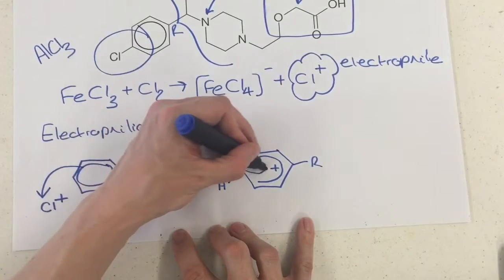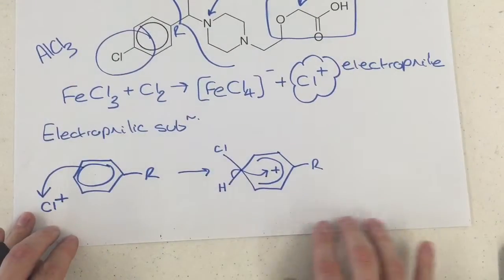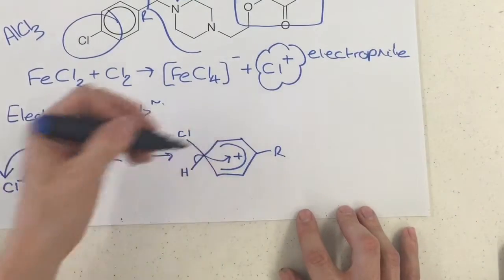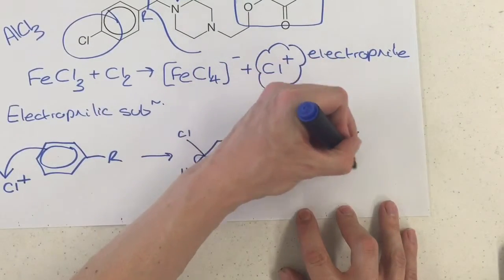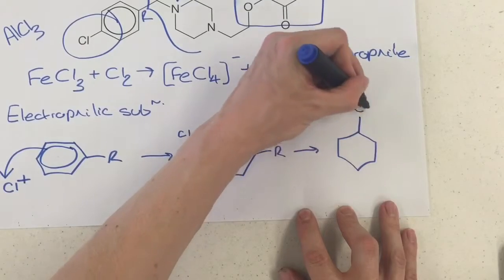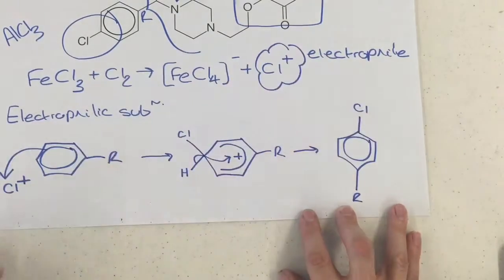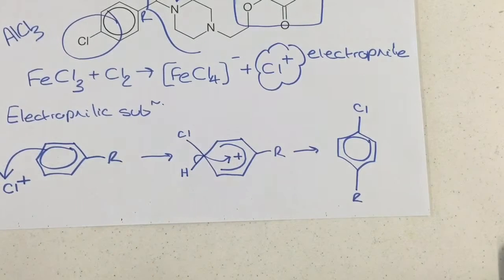You then have to break this bond and restore the aromaticity back into the structure to reform the ring. So you've got a chlorine directly across from the R group.